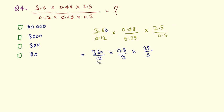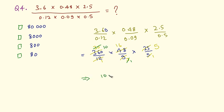Cancelling: 360 divided by 12 is 30, 48 divided by 9... working through gives us 10 into 16 into 5 in the numerator and 1 in the denominator. So 16 times 5 is 80, and 10 into 80 equals 800.